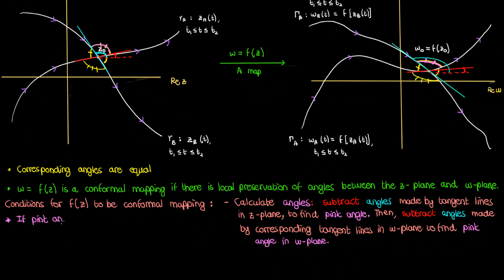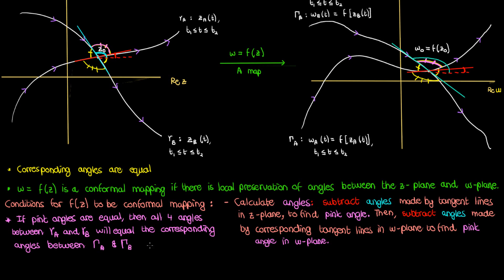Now if the pink angle in the z-plane equals the pink angle in the w-plane, then all the other angles in the z-plane will also equal their counterparts in the w-plane. I just need to show that the pink angles are equal between the z and w planes for f of z to be a conformal mapping and have full preservation of angles. It's just simple geometry. The pink angles are automatically equal to their opposite angles — the angles that are facing down. Because of this, the angle on the right is also equal to the angle on the left, because the pink angle plus the angle on the right is 180 degrees and the pink angle plus the angle on the left is also 180 degrees. So if the pink angles are equal, the angles facing down are also going to be equal, and the same equality will apply to the angles facing right and left.